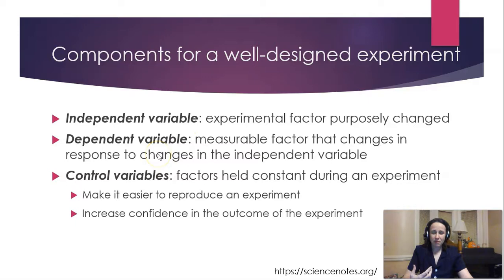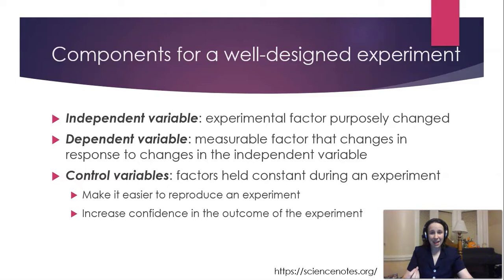Real life is not so simple as to just have two variables, so everything else is considered a control variable. A control variable is a factor held constant during the experiment. This makes it easier to reproduce experiments during peer review. Having controlled variables increases confidence in your outcome because you are limiting what's called a confounding variable — something that also impacts the dependent variable but that you are not controlling or are not aware of.